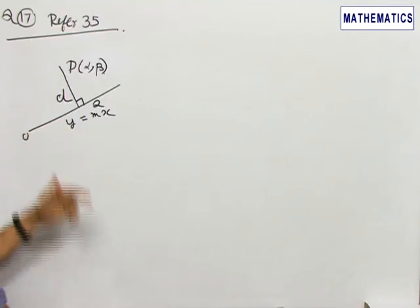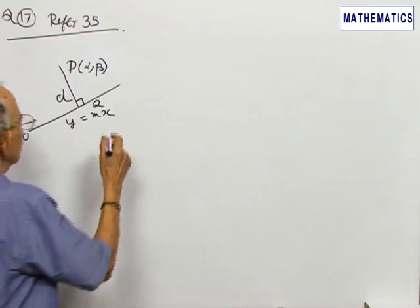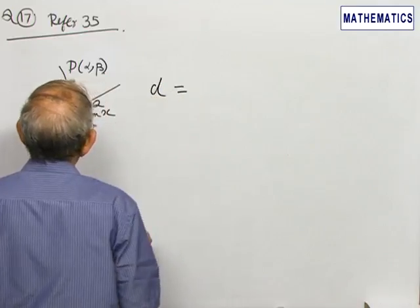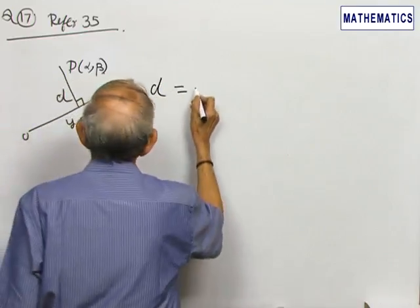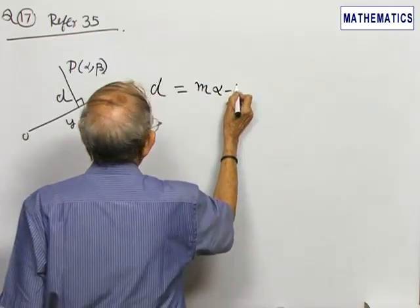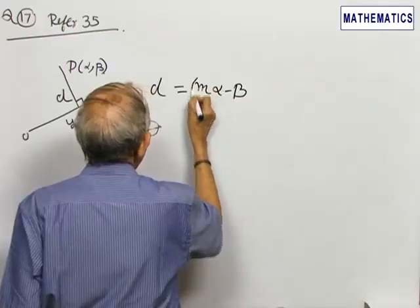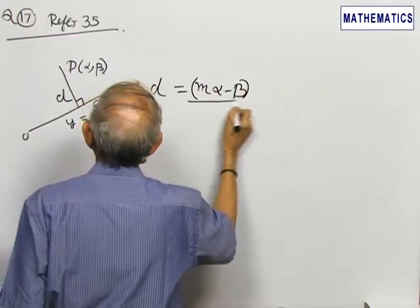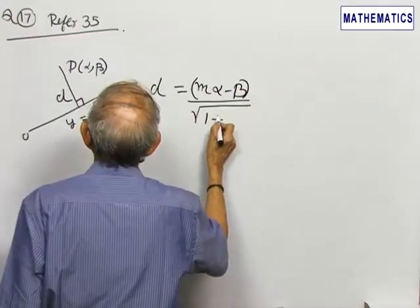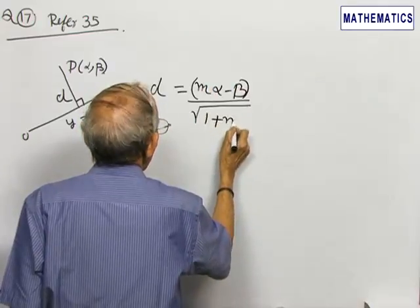Let me apply the length of the perpendicular formula. Therefore, D is equal to m alpha minus beta by square root of 1 plus m square.